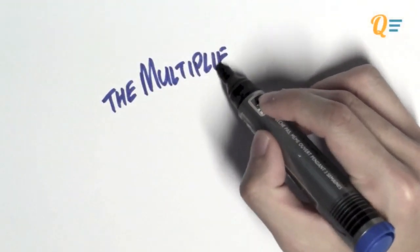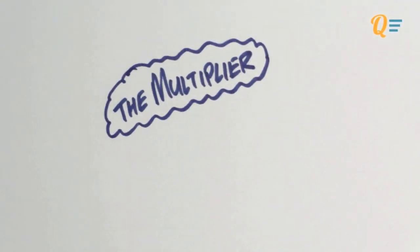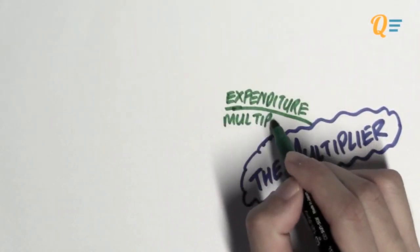So, in this video, we're going to be talking about a concept known as the multiplier. And more specifically, we're going to be talking about the expenditure multiplier in macroeconomics.